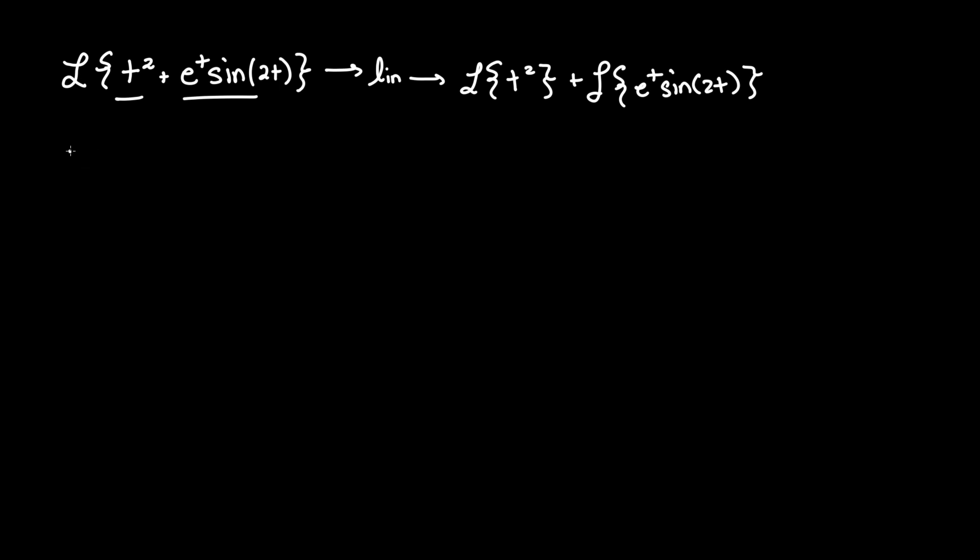We know from our table the Laplace transform of t to the n equals n factorial over s to the power of n plus 1, where n can equal 1, 2, 3, and so on. Therefore, with our term, Laplace of t to the power of 2,